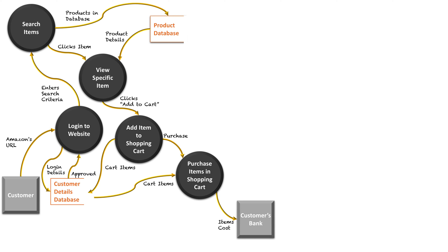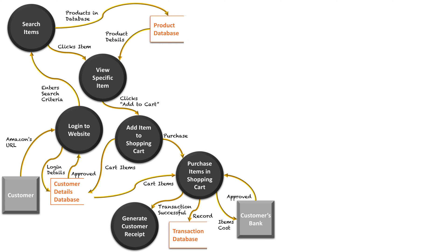At this point, we contact the bank. Whatever the total cost of the items in the shopping cart is, it gets sent to the bank, a request is made, and the bank gives an approval — the items get purchased. Amazon then records this as a new entry in their transaction database with the date and amount paid. The transaction is deemed successful, a receipt is generated for the customer, and it may also be stored on Amazon's database so they can reference it later.